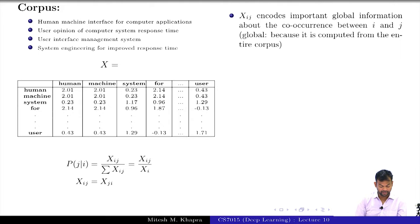So I will go back to the co-occurrence matrix. Remember X_IJ encodes the important global information about the word I and J. Whether you replace it by PMI or PPMI or just keep the counts, it just gives you some information about how many times these two words actually appeared together. So X_IJ encodes this global information, and I call it global because it is computed from the entire corpus, fine.